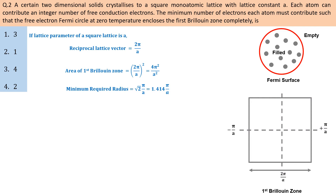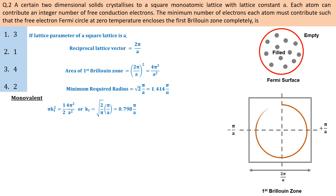The Fermi circle has radius K_F. The Fermi circle area depends on the number of electrons per atom. If the atom is monovalent, the Fermi circle area is half the first Brillouin zone area, so the radius is 0.798 pi/A, which does not fully enclose the first Brillouin zone.